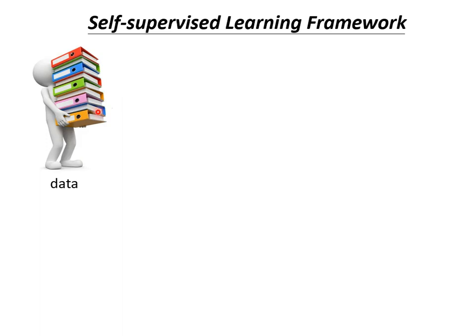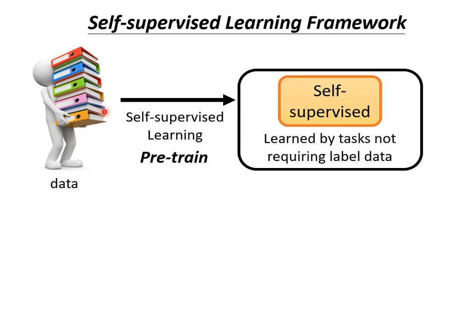Auto-Encoder can also be considered a part of self-supervised learning. Let's quickly review the framework of self-supervised learning. How does self-supervised learning work? First, we start with lots of unlabeled data. With these unlabeled data, we can train a model with tasks that do not require annotated data — for example, fill-in-the-blank questions or next token prediction. Such a learning manner is known as self-supervised learning or pre-training.